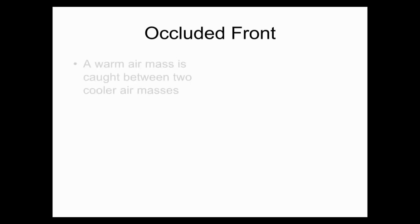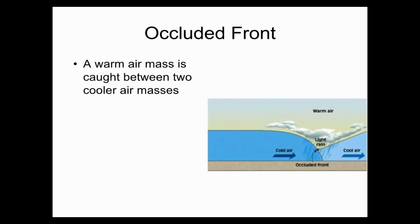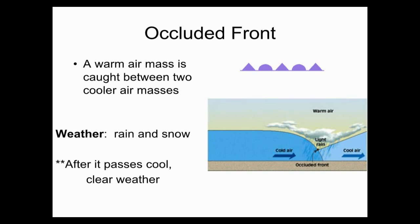The last type of front is an occluded front — the most complex kind. This is where warm air gets caught between two cooler air masses. The denser cool air moves underneath the less dense warm air, pushing it upward, and the two cooler air masses meet in the middle. The temperature near the ground becomes cooler because the warm air mass is occluded or cut off from the ground. As the warm air cools and its water vapor condenses, this brings cloudy rain or snow. After an occluded front passes, you'll have cool, clear weather.